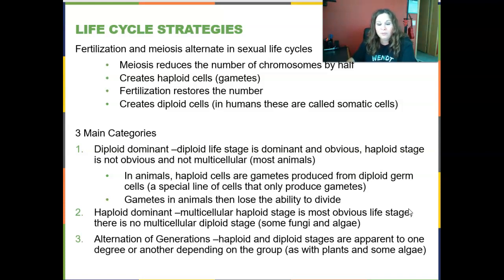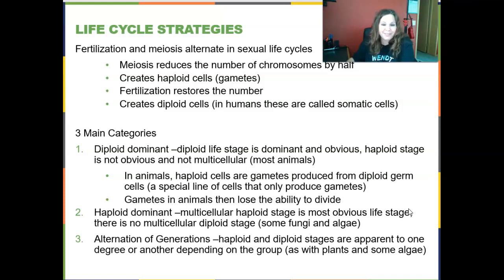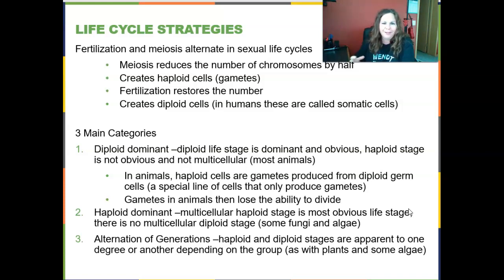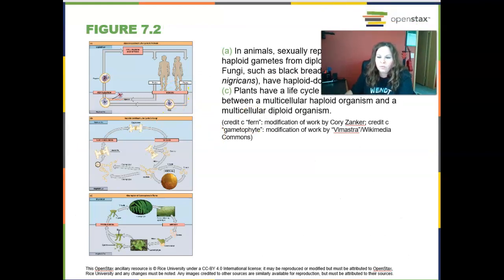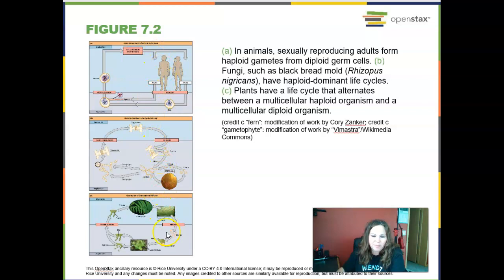Haploid dominance organisms may even outnumber us. In strategy three, alternation of generations, both haploid and diploid stages are apparent to varying degrees depending on the group. They go through stages where haploid cells are active, and stages where diploid cells dominate. This occurs in certain plants and some algae. Diagrams in the OpenStax Concepts of Biology textbook illustrate these strategies in more detail.